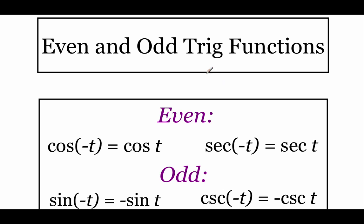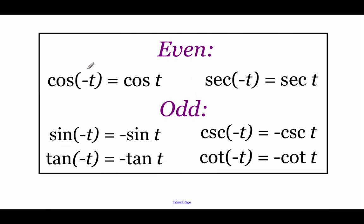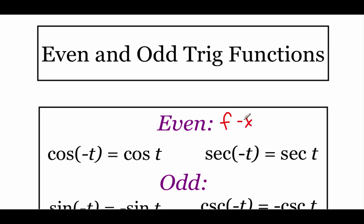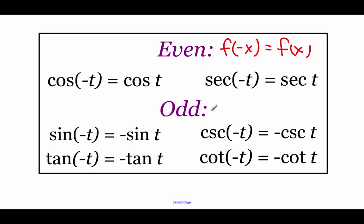Going back to even and odd functions from section 1.5 — we also have even and odd trig functions. The even functions are cosine and secant. The odd functions are sine, tangent, cosecant, and cotangent. An even function means f of negative x equals f of x — so cosine of negative t equals cosine of t. An odd function means f of negative x equals negative f of x — so sine of negative t equals negative sine of t, and same for tangent, cosecant, and cotangent.